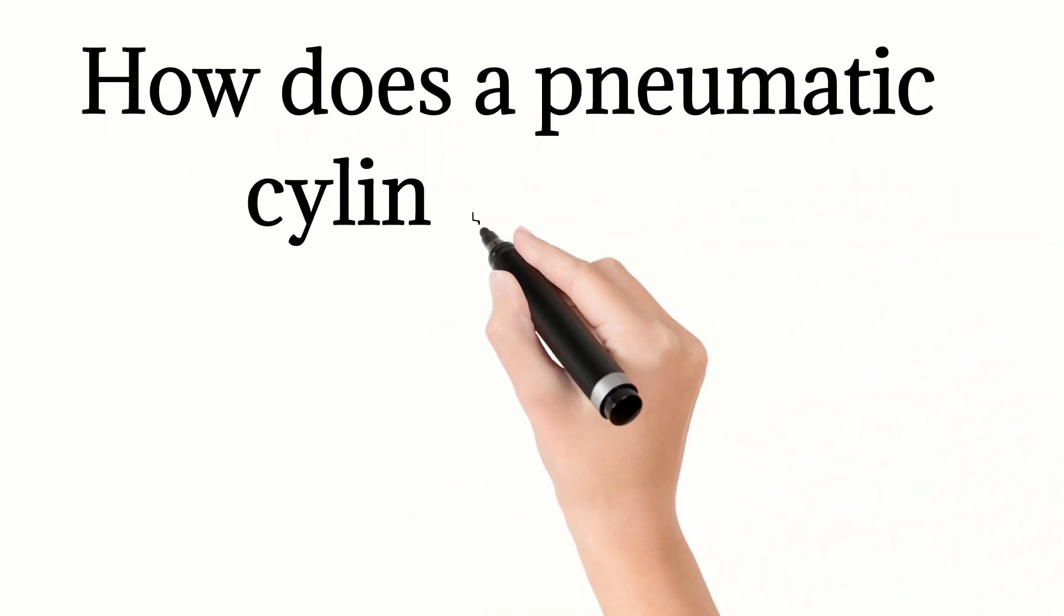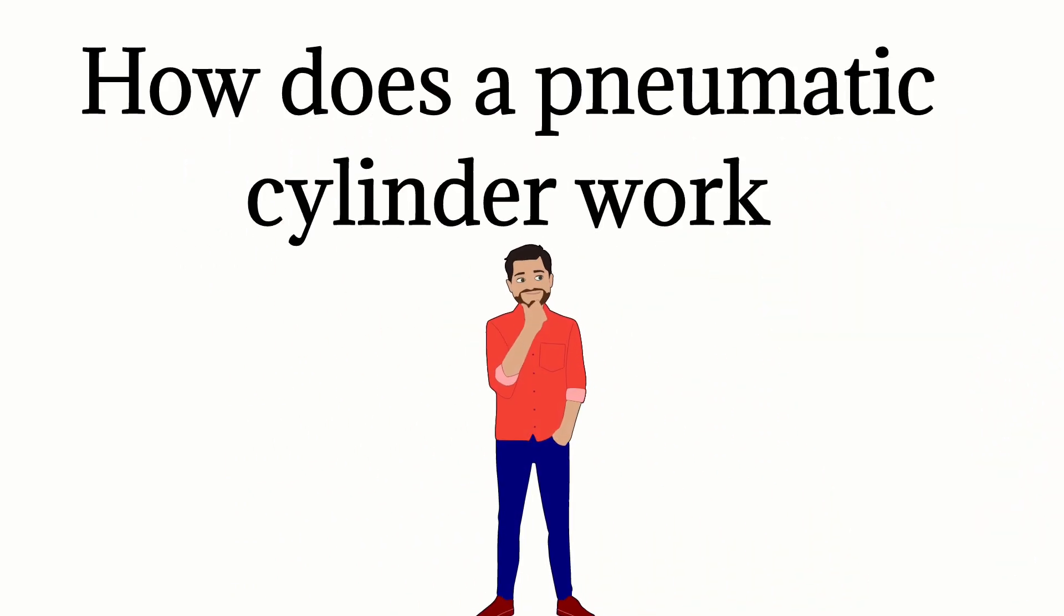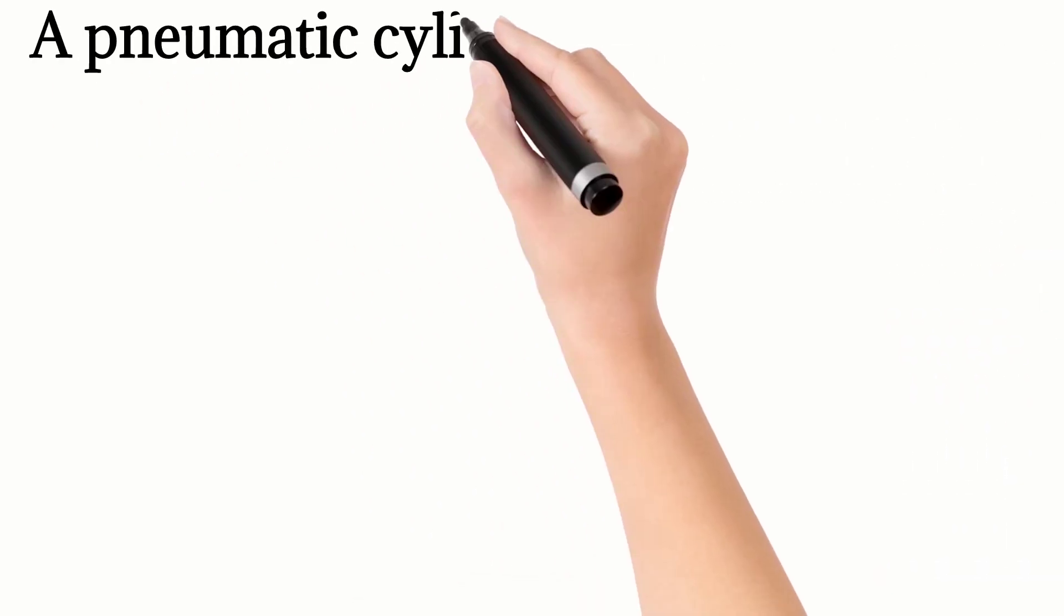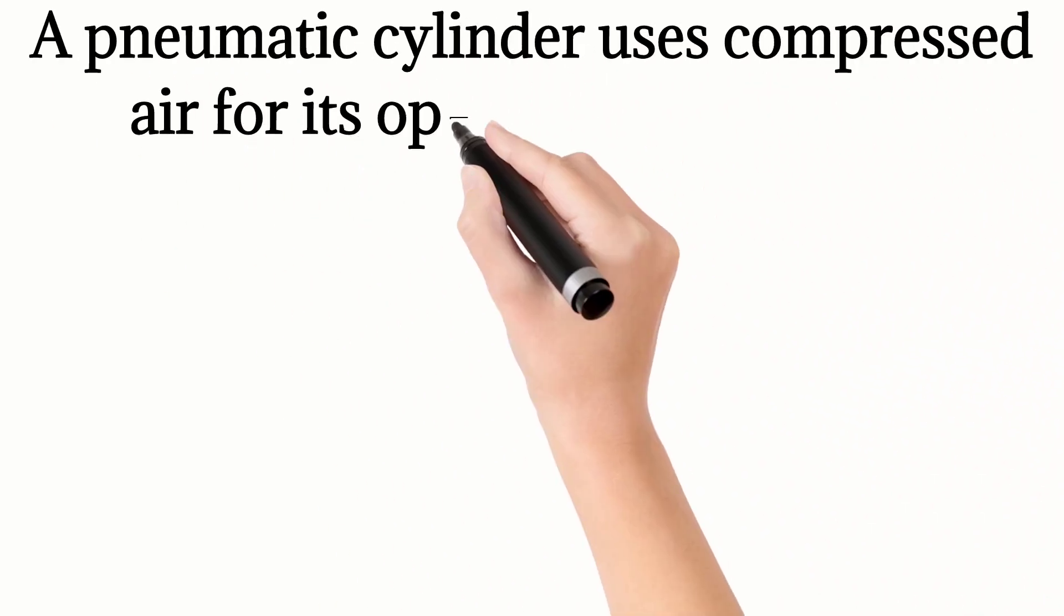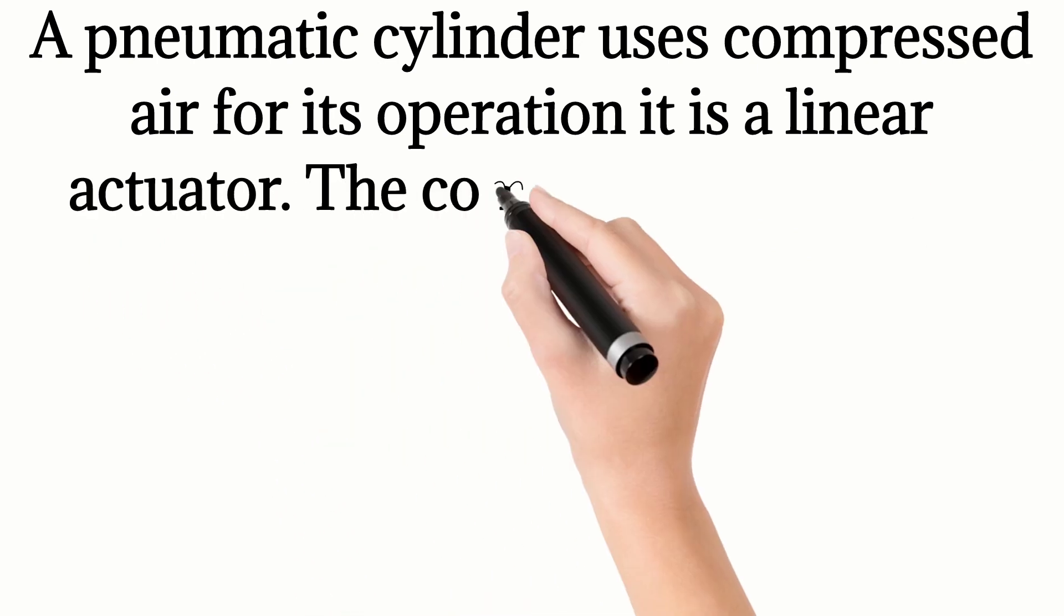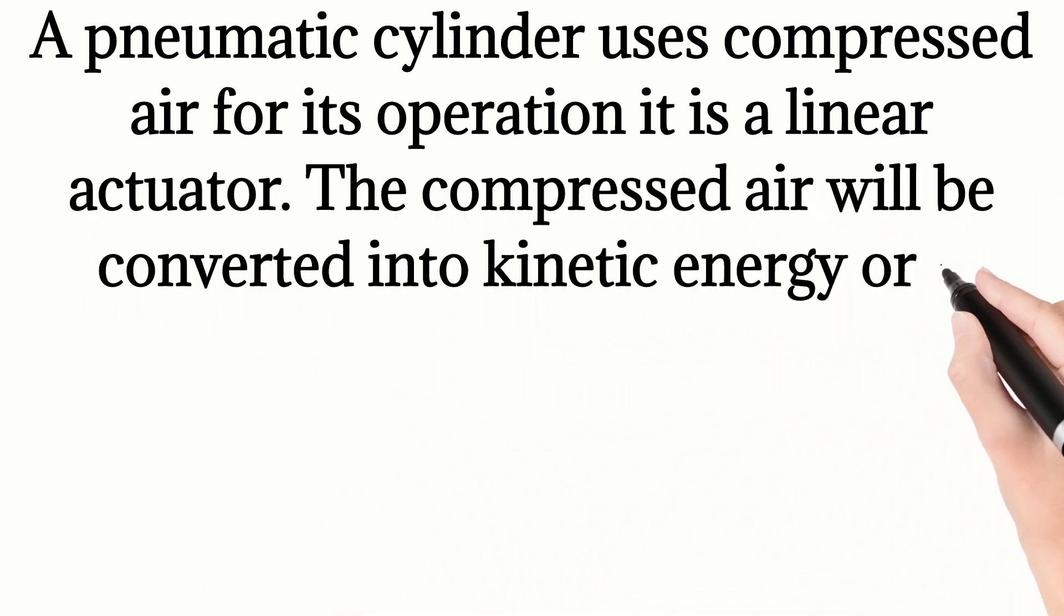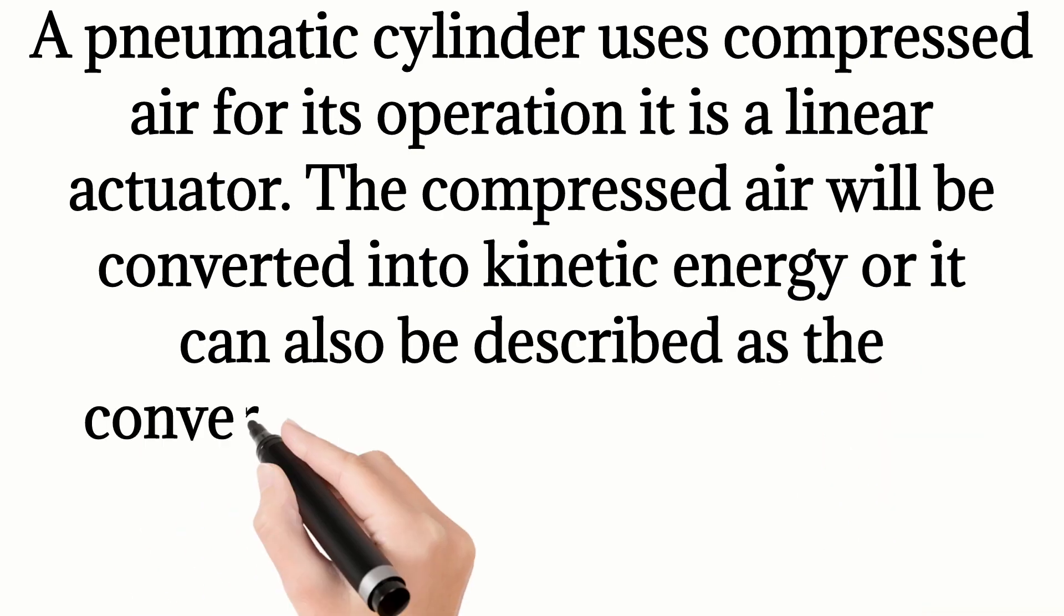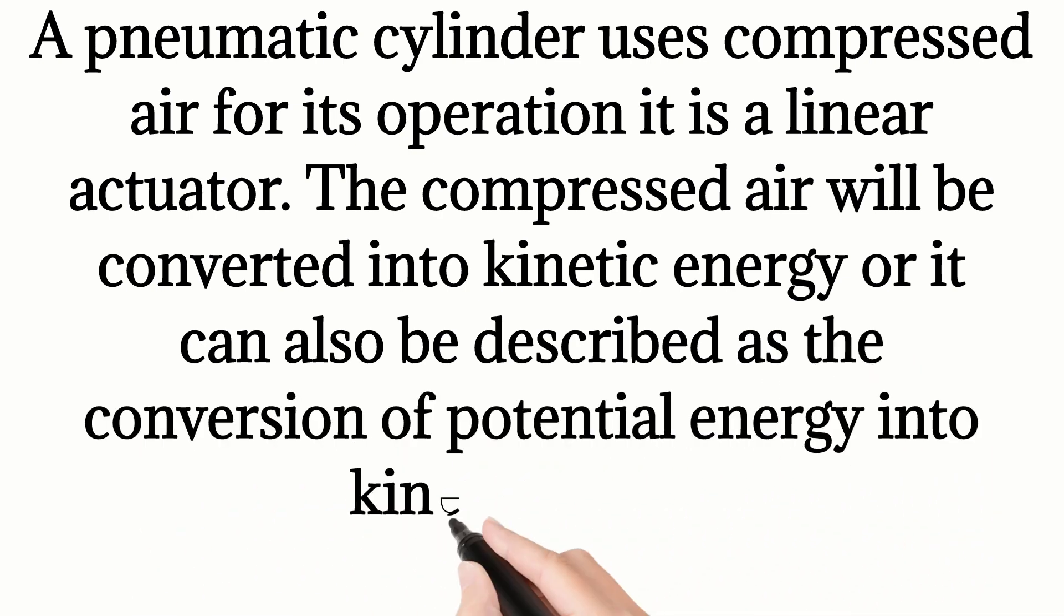How does a pneumatic cylinder work? A pneumatic cylinder uses compressed air for its operation. It is a linear actuator. The compressed air will be converted into kinetic energy, or it can also be described as the conversion of potential energy into kinetic energy.